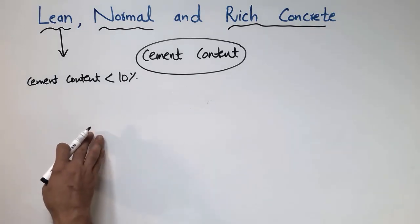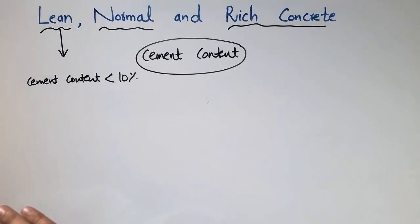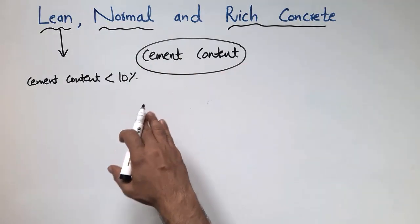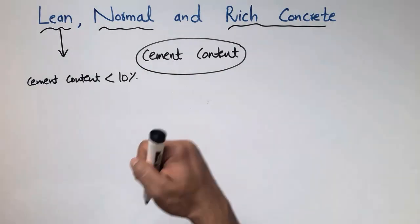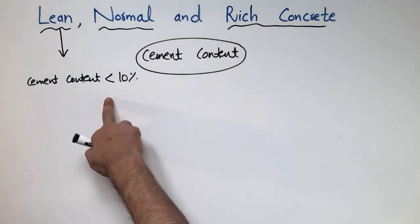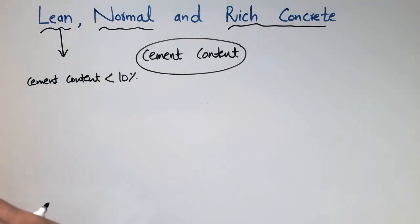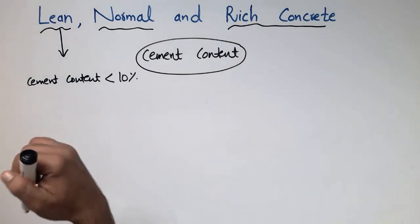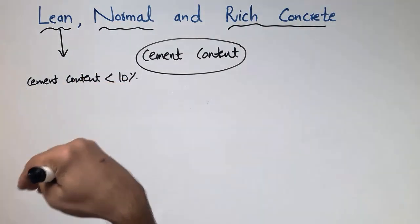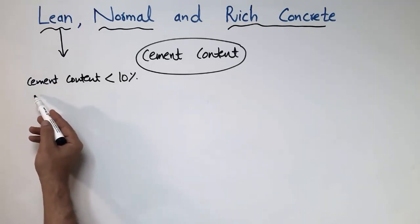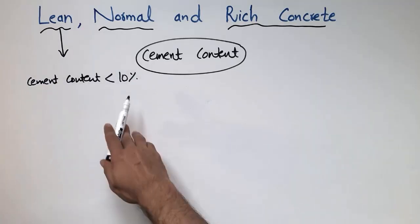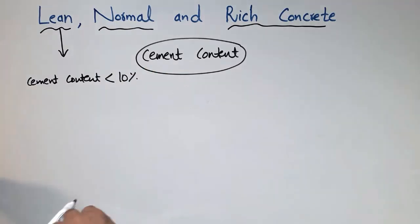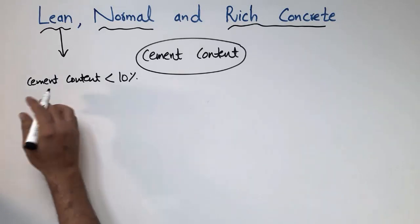Lean concrete is used just for smoothening surfaces — for providing smoothness so that we can place reinforcement above the surface and create our real structures. This concrete has nothing to do with strength; it is just for the smoothening of surfaces. That's why we keep the cement content low. If you increase the cement content, it will increase the strength of the concrete, but here we just want to provide a smooth surface.